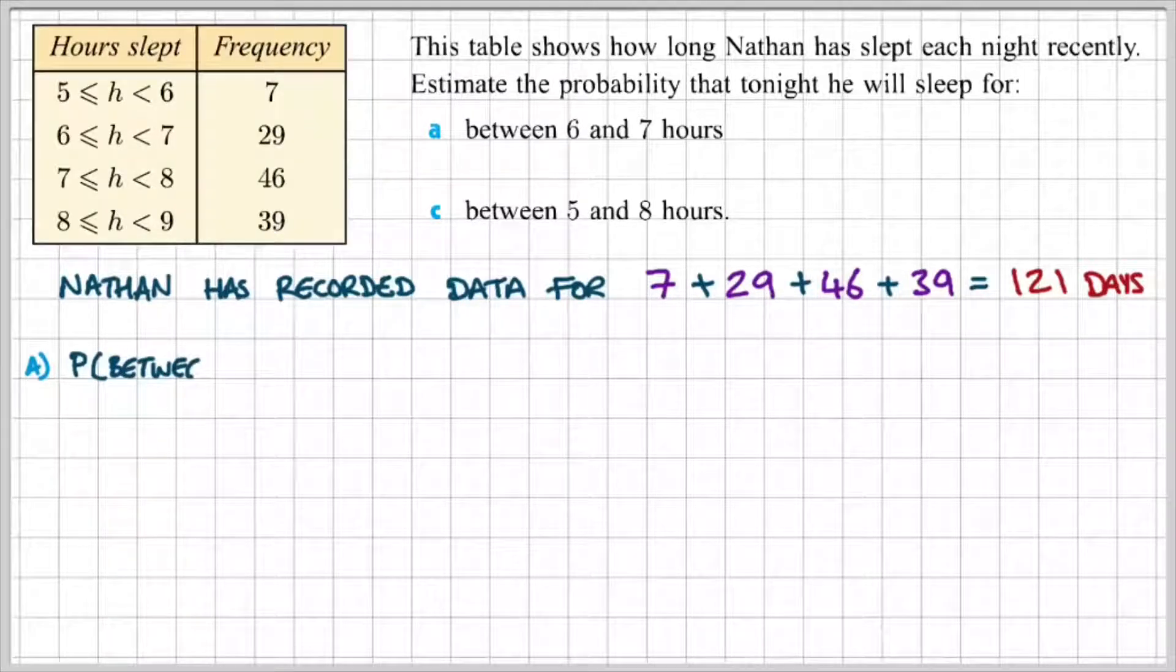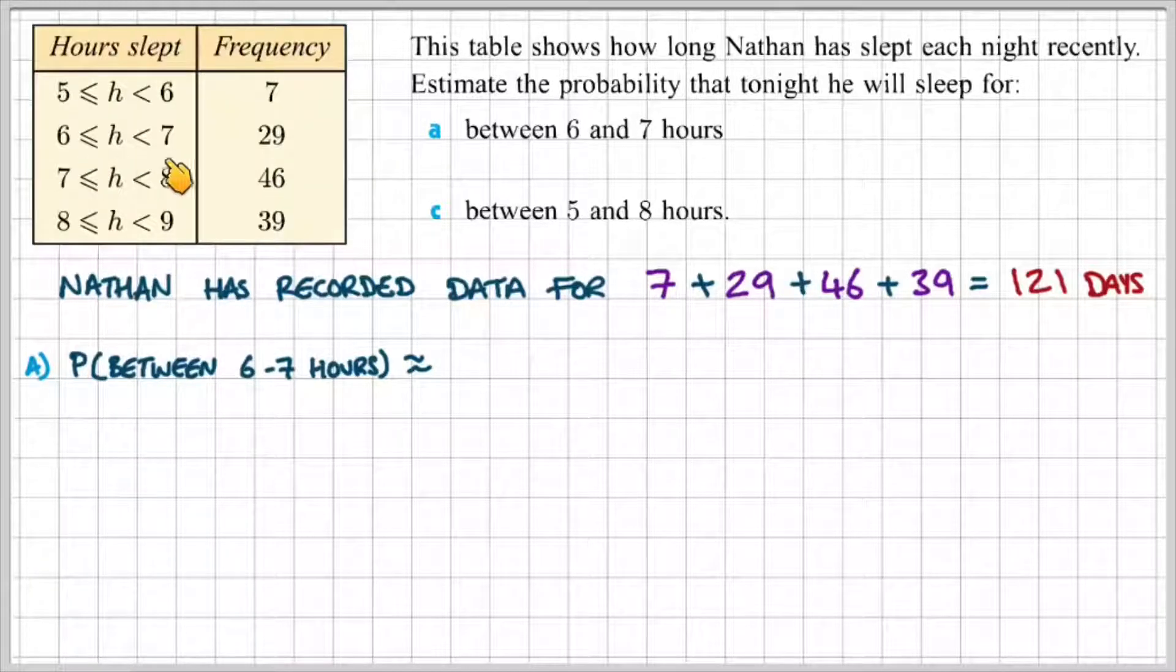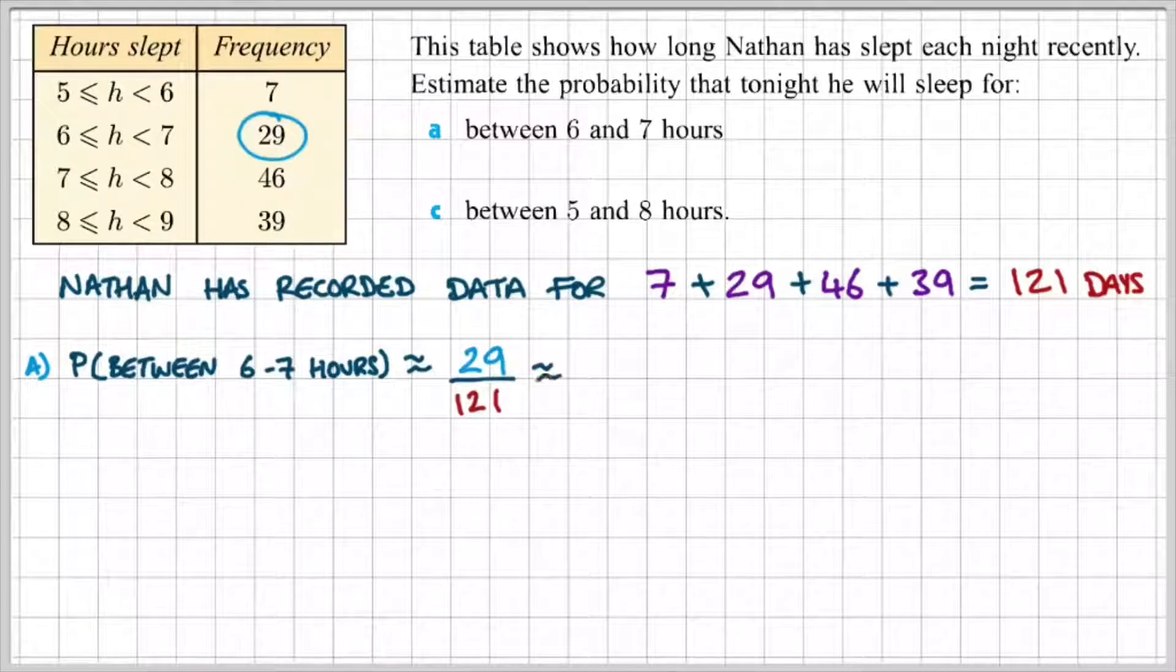So, in order to solve part A, which is the probability between 6 to 7 hours, we know from the table that Nathan slept between 6 to 7 hours on 29 separate occasions. So, that will be 29 days over 121, which will give us approximately 24%.